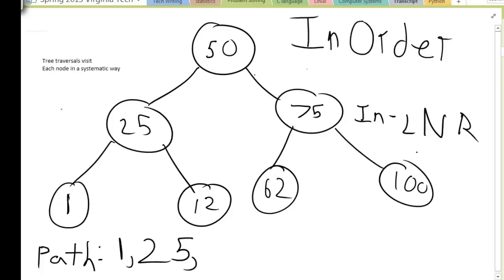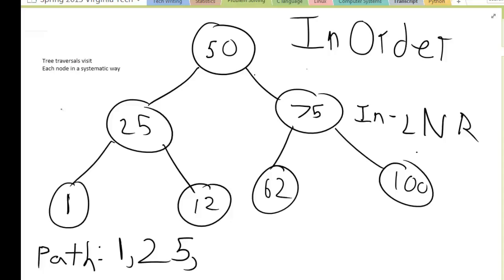Then I run my algorithm again on 25. Can I go left? Already been there. Can I do the node? Already done. Can I go right? Yes. So I go to 12. At 12, I can't go left, so I visit the node — 12 is the third node we visit. Then at 12: can't go left, already done the node, can't go right, so I pop back up. I can't go left for 25, can't get the node, can't go right because I already visited 12. So I pop back up to 50.